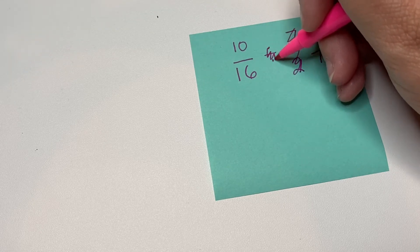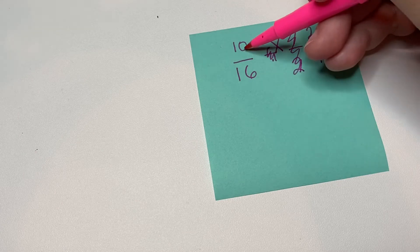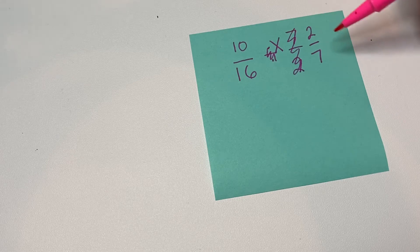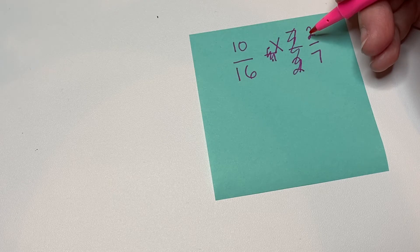Let's see if we can cancel here at all. Well, seven and ten don't have any common factors, but two and sixteen do. So two and sixteen both have two as a factor.